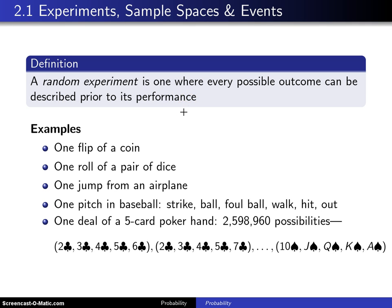Here are five examples. The first is one flip of a coin. In this particular case, all of the outcomes can be described prior to its performance, and they are heads and tails.